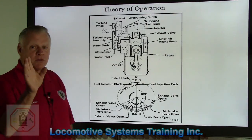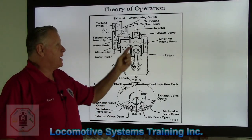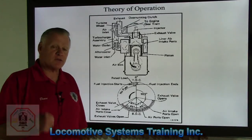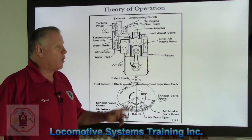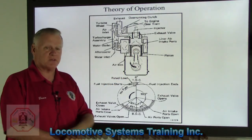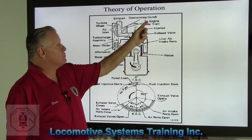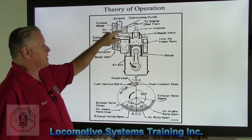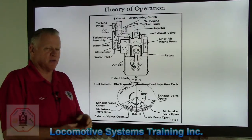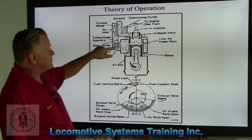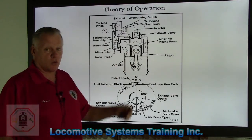On an EMD turbocharged engine, the turbocharger is gear-driven — off the rear gear train of the engine — up to and including throttle notch six. Once we have enough heat energy built up in throttle notch seven and eight, the overrunning clutch will engage, and the turbo wheel will disengage from the gear train. The impeller and turbo wheel will actually rotate faster than the gear train, giving us the maximum amount of air energy down into the air ducts, through the aftercooler, and into the air box. The more fresh air we can pump into this engine, the more horsepower we get out.